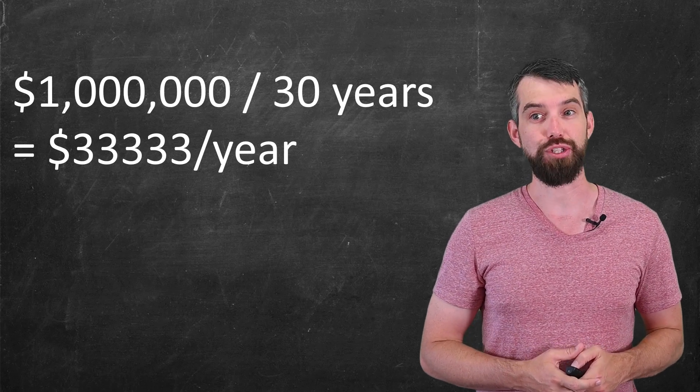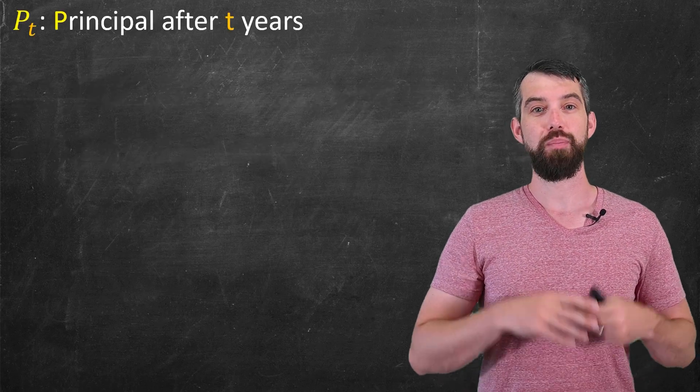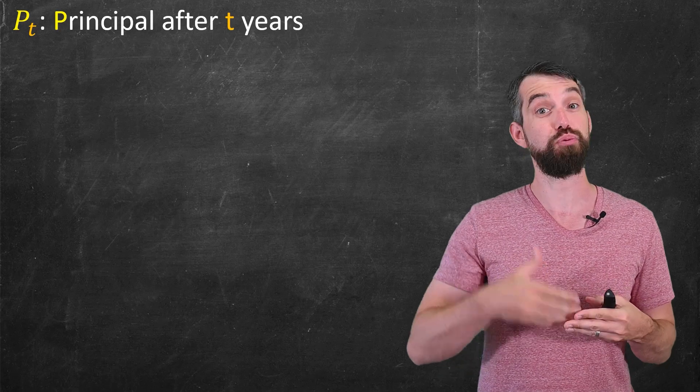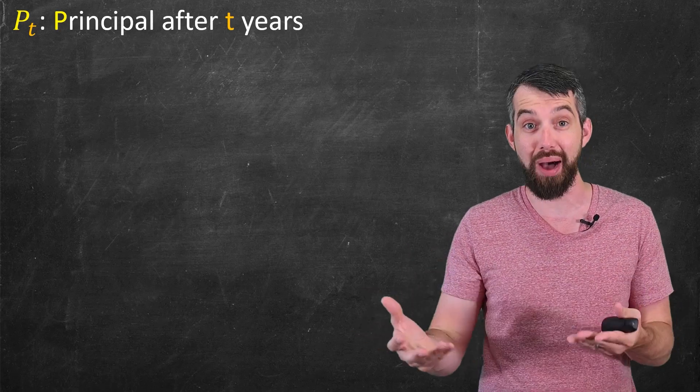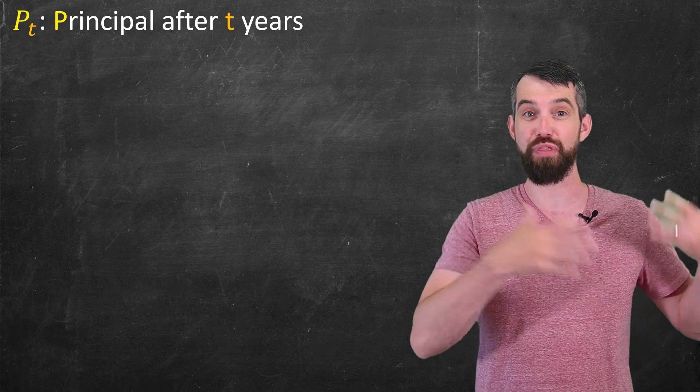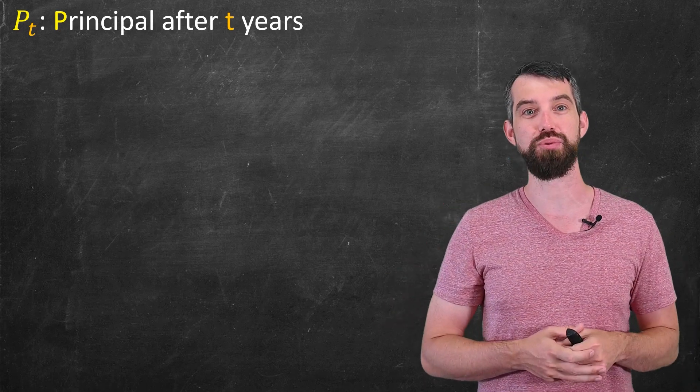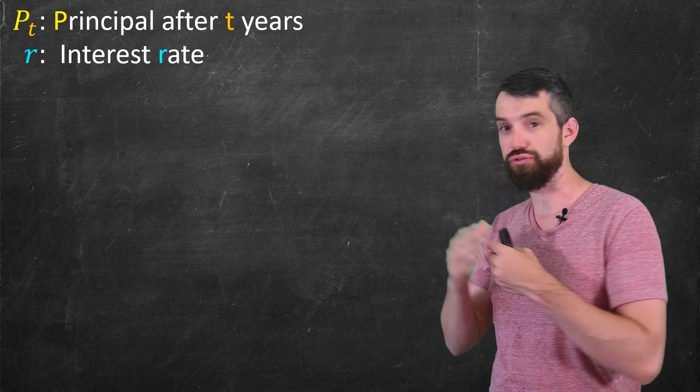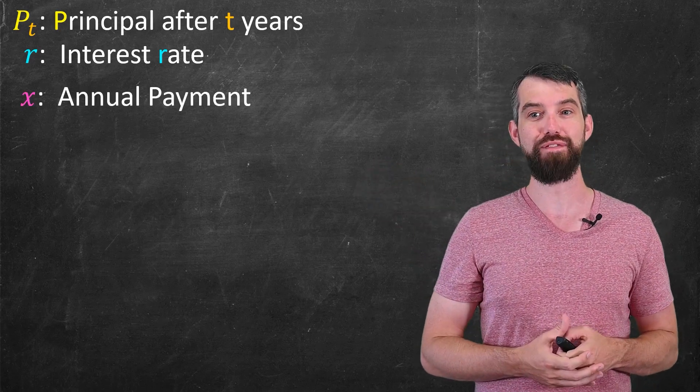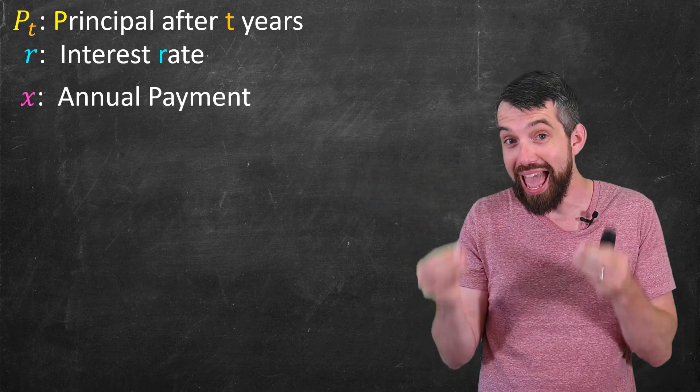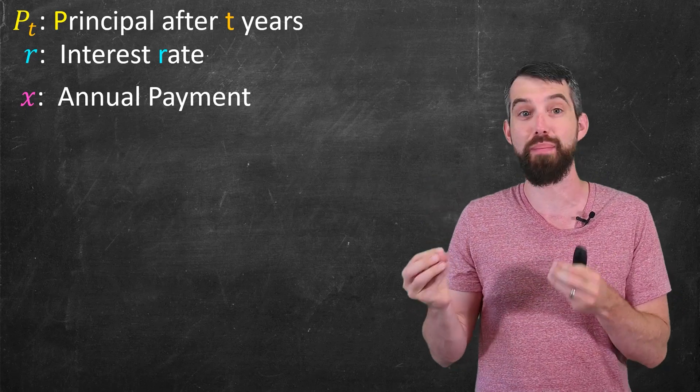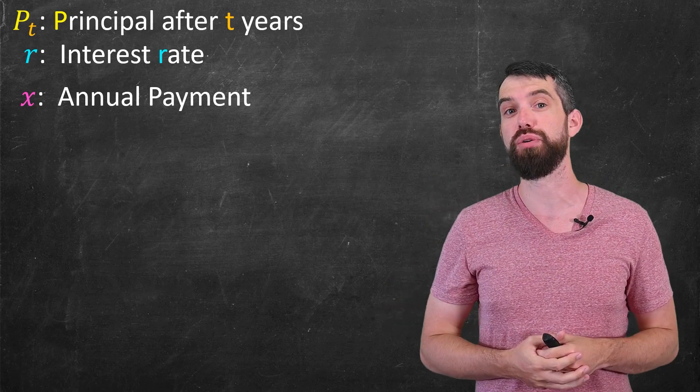Okay, so what kind of formula should we build? I want to start with some terminology. So I'm going to let P_t denote the principal after t years. Principle just means the amount of money that you're going to have. So, for example, P_30 would be the amount that I would have in 30 years when I'm claiming I'm going to retire. Then I'd have an interest rate, which I will denote with the letter r. And finally, I'm interested in making an annual payment of some amount x, an amount that I don't currently know what it's going to be.